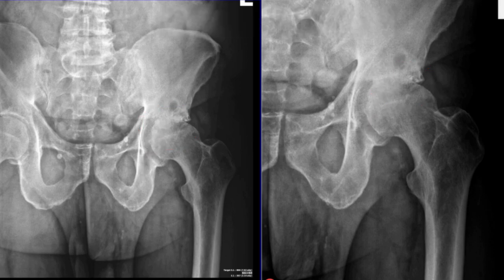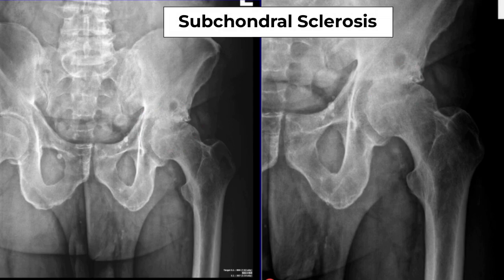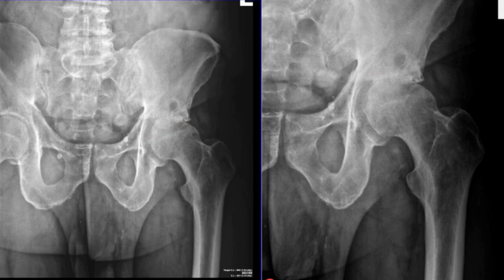The next thing we look for is subchondral sclerosis. This is the dense white bone that forms when you unfortunately develop bone-on-bone arthritis.